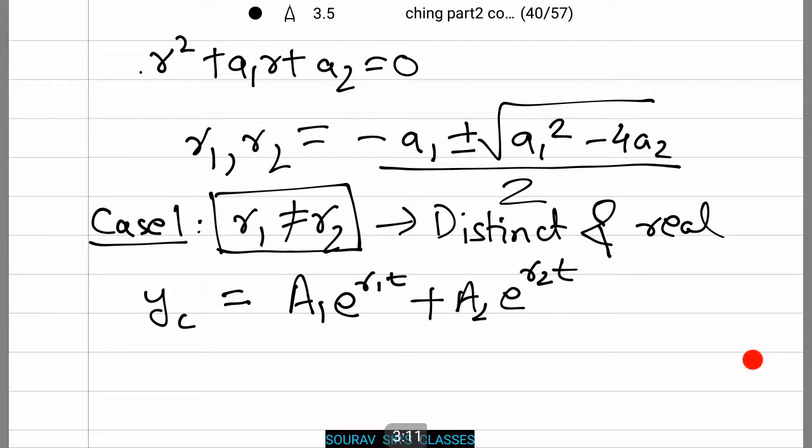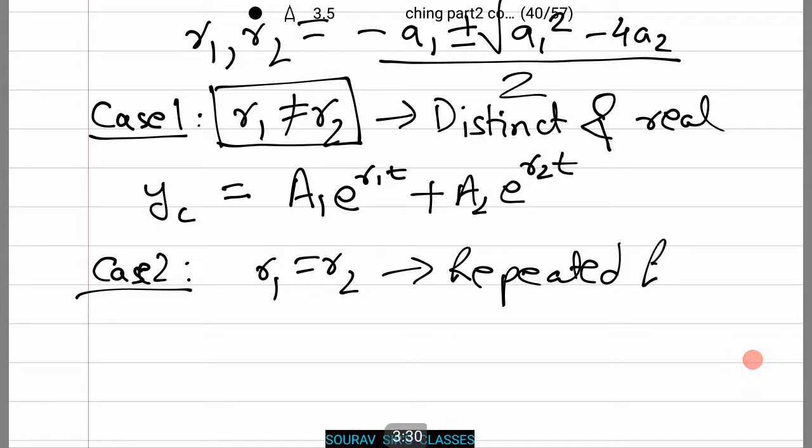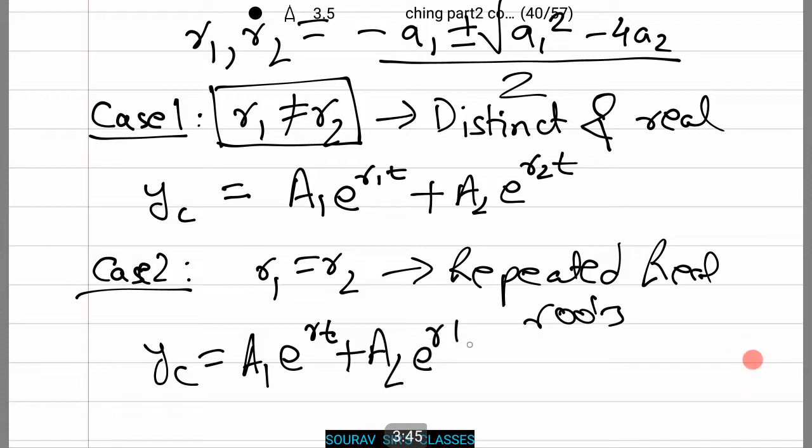We will take the next case, that is Case 2 of repeated roots, where r₁ equals r₂. In this case, yc equals A₁e to the power rt plus A₂e to the power rt, which equals (A₁ plus A₂)e to the power rt.